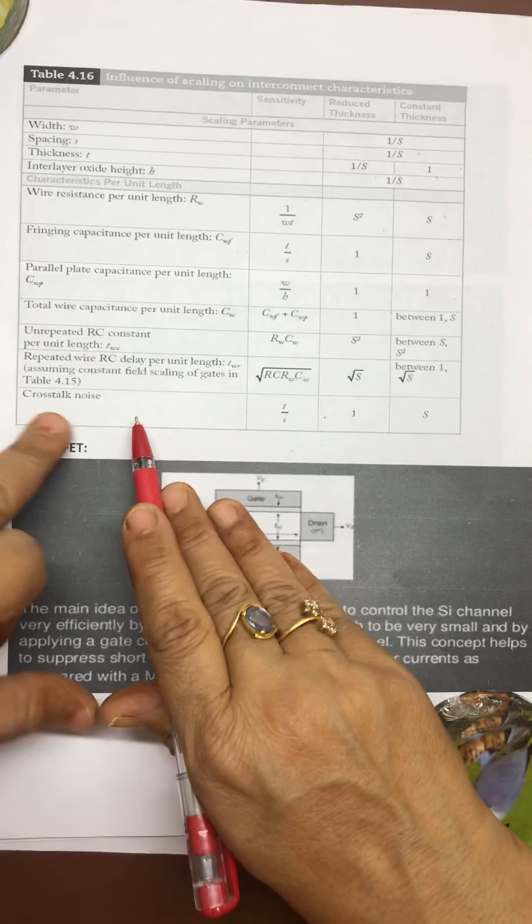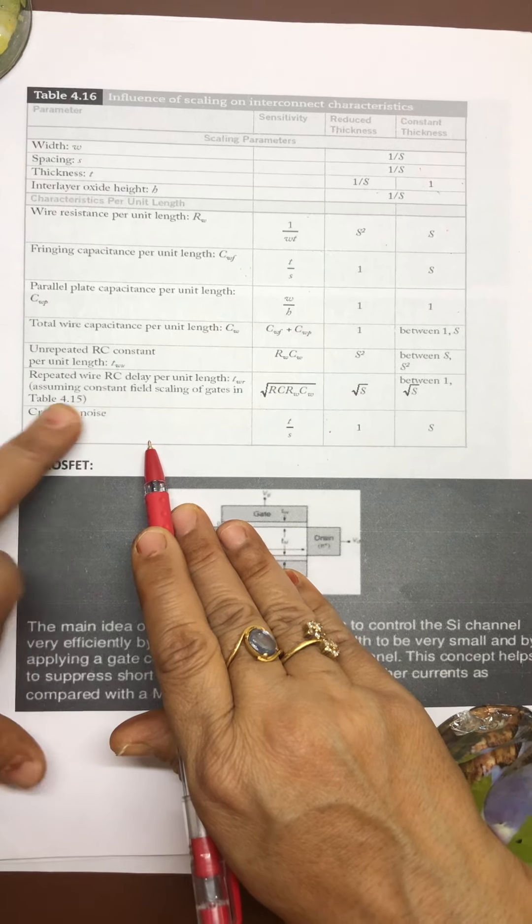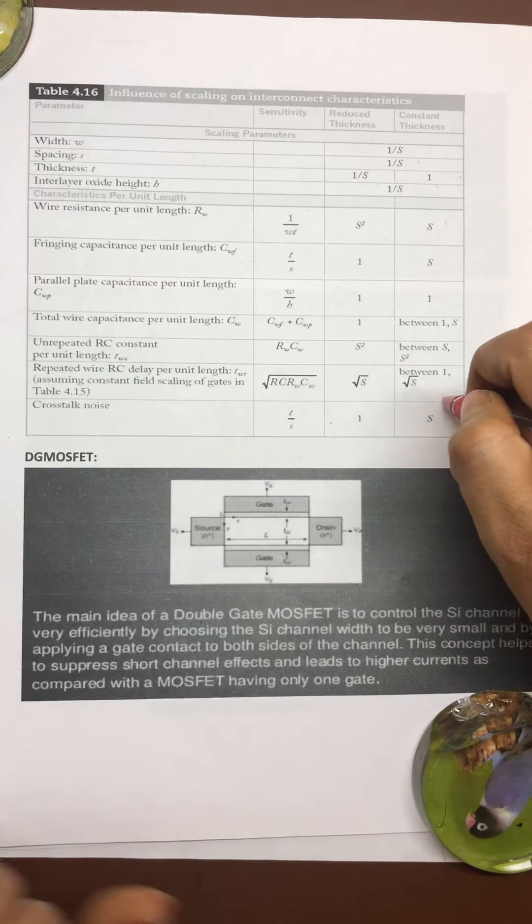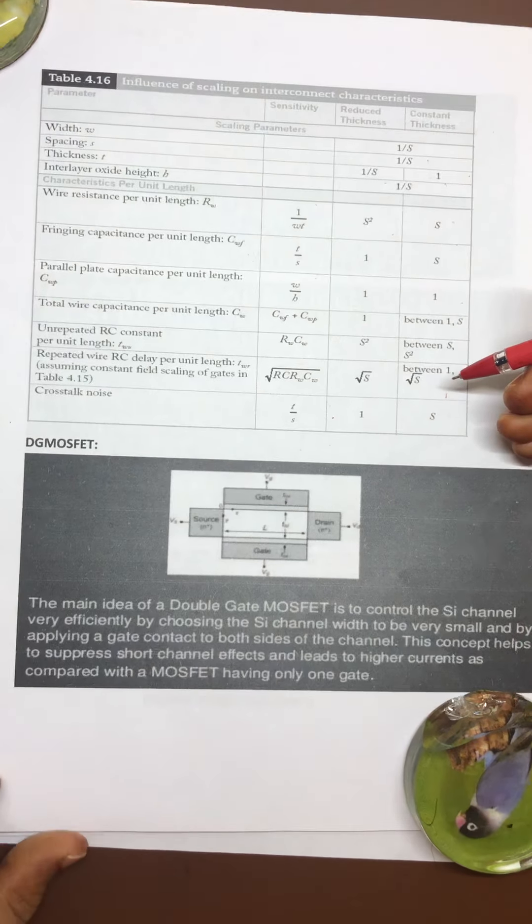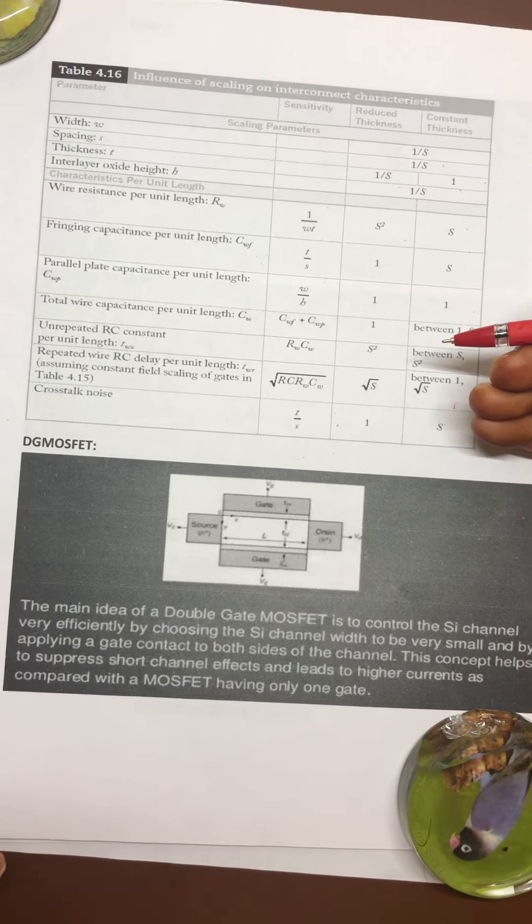Similarly, there are other parameters like crosstalk noise, unrepeated RC constant per unit length, repeated RC per unit length, and their variations are like this. These both tables are the backbone for the scaling of CMOS devices and interconnect characteristics. Thank you so much.